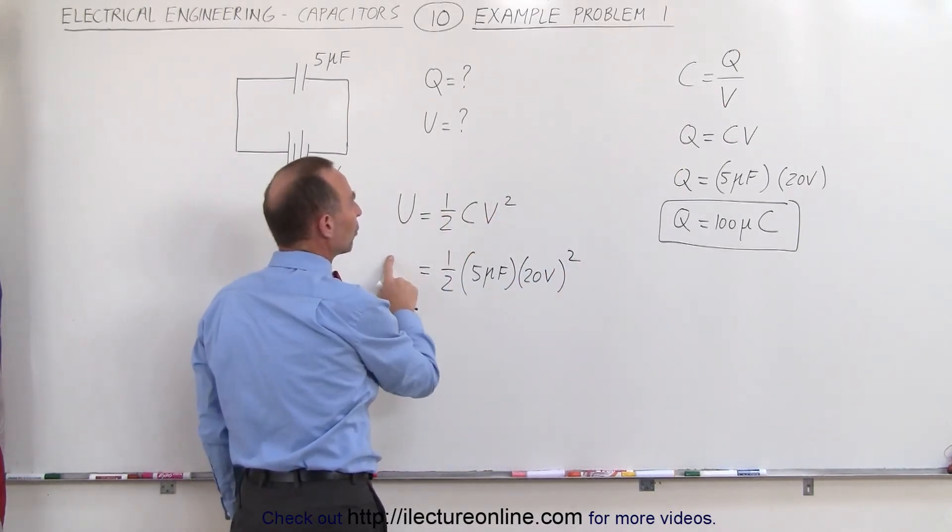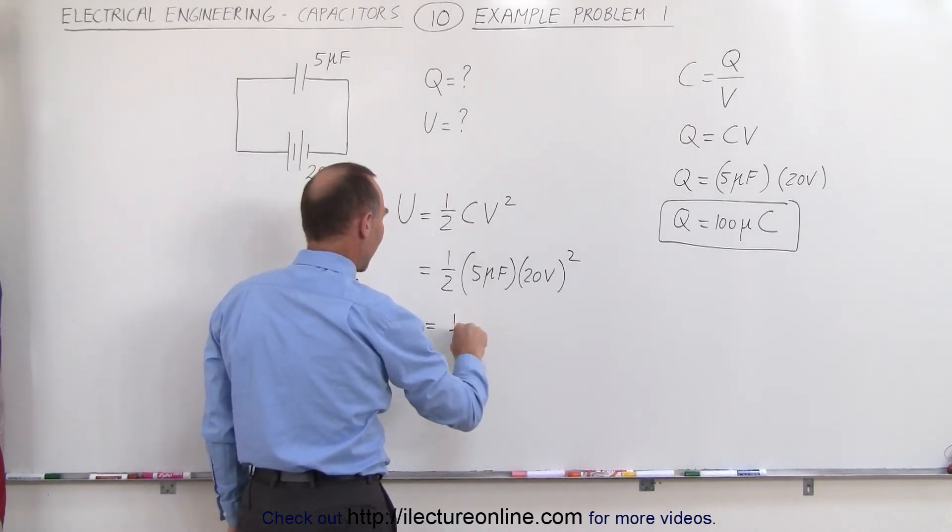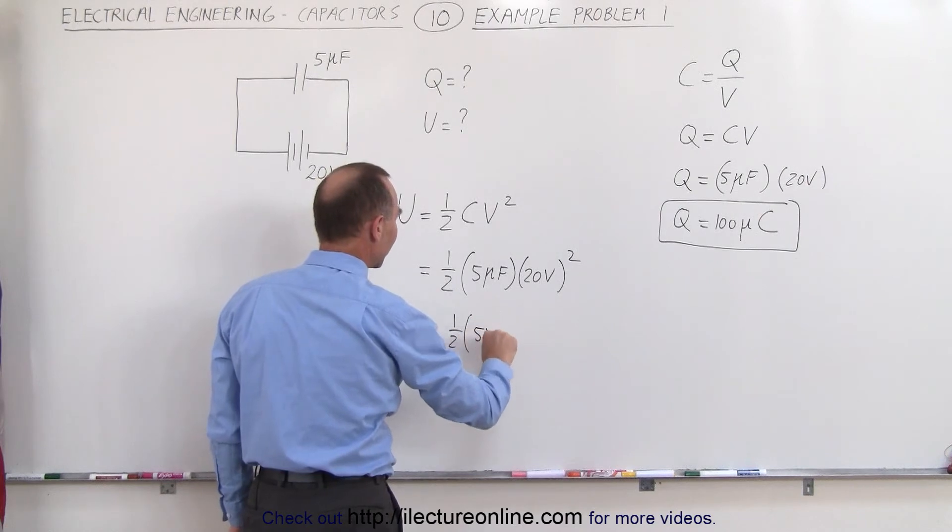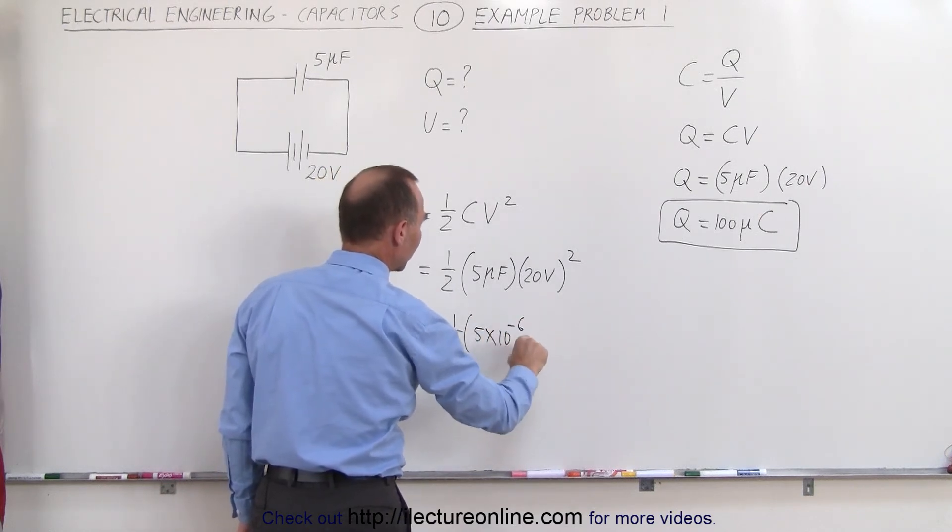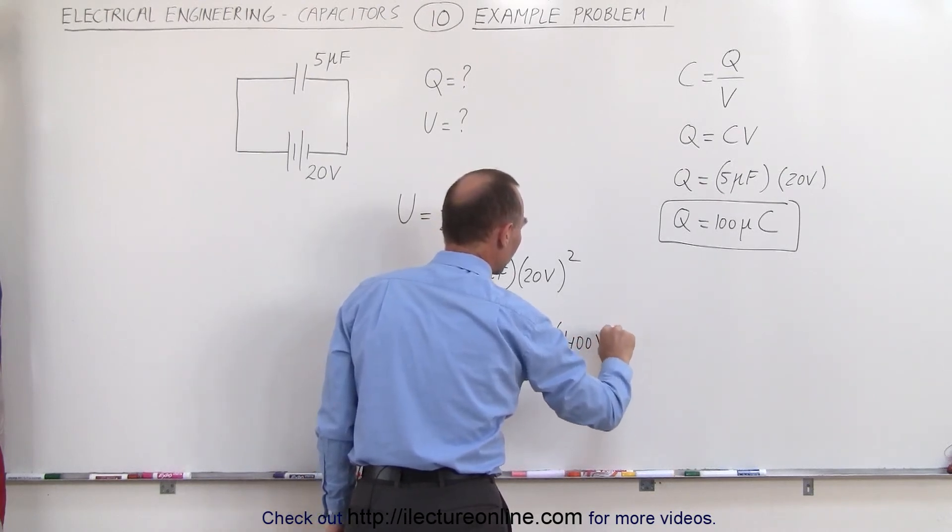Now the units of that will be in terms of joules. So when we multiply this together, we get 1 half times 5 times 10 to the minus 6 farads times 400 volts squared.